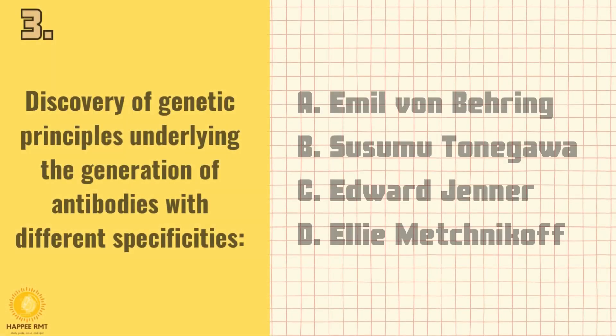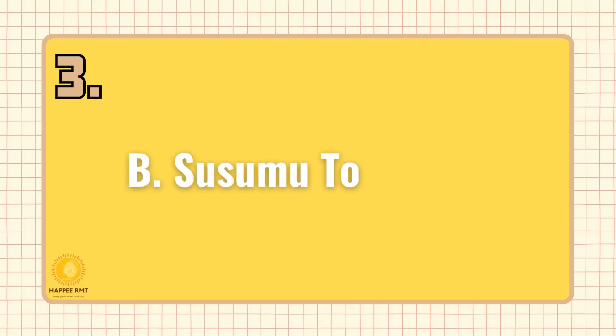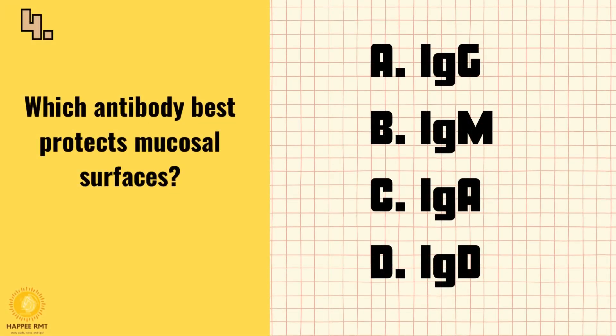Number 3. Discovery of genetic principles underlying the generation of antibodies with different specificities. A. Emile von Bering. B. Susumu Tonegawa. C. Edward Jenner. D. Elie Metchnikoff. Answer is B: Susumu Tonegawa.